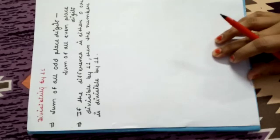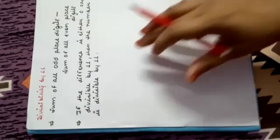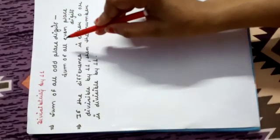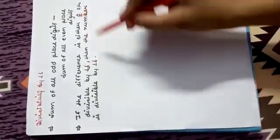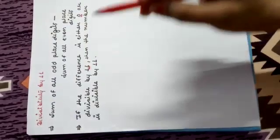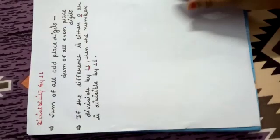Now, divisibility by 11 — it is very important. The rule is: sum of all odd place digits minus sum of all even place digits. If the difference is either 0 or divisible by 11, then the number is divisible by 11.